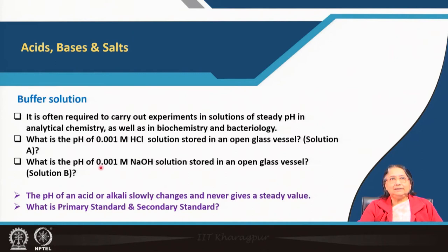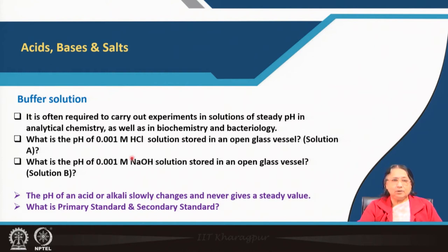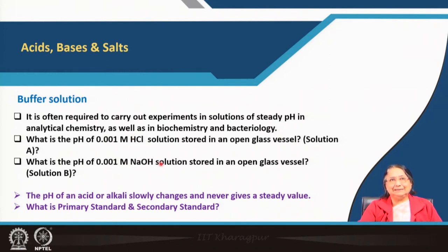Similarly, 0.001 molar NaOH stored in an open glass vessel is called solution B. If stored for 7 days, pOH = minus log(1×10⁻³) = 3, so pH = 14 − 3 = 11. But is that direct calculation correct, or will the actual pH be different? That is the question.